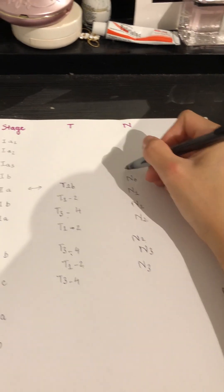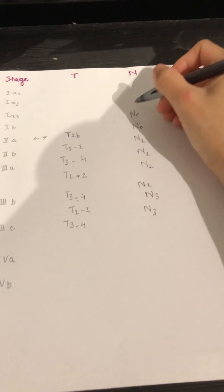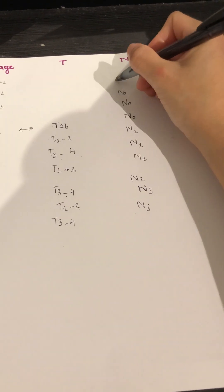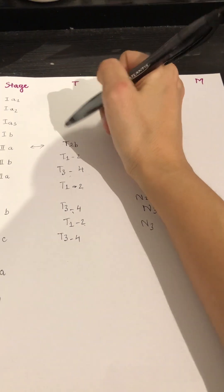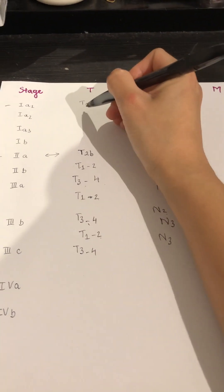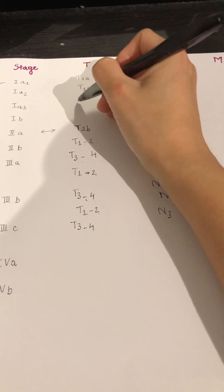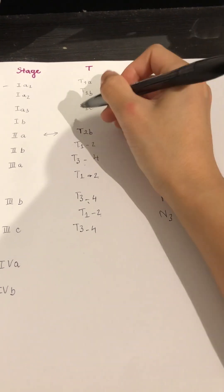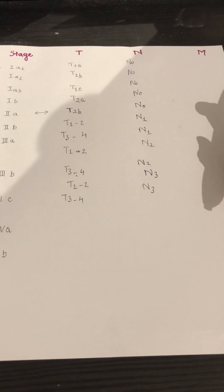And then everything would be easier after. So N0, N0, N0, N0, N0, and here you just have to just step up to T2B here. So T1A, T1B, T1C, T2A. That's easy.